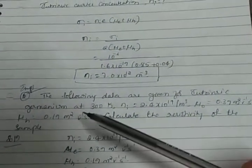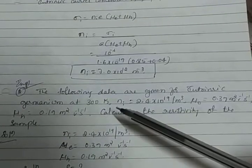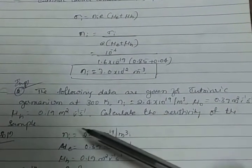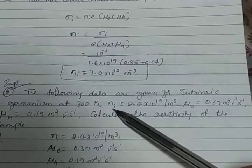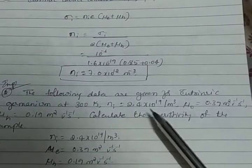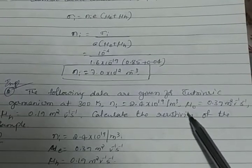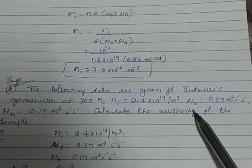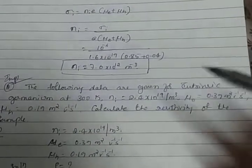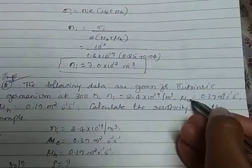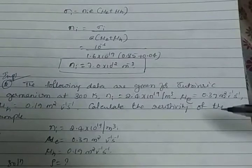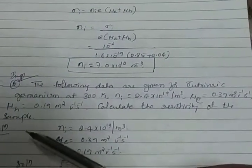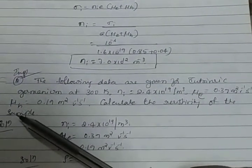Next, following data are given for intrinsic germanium at 300 Kelvin. Intrinsic concentration is Ni. The mobility of electron is 0.39 m²/Vs and the hole mobility is given.